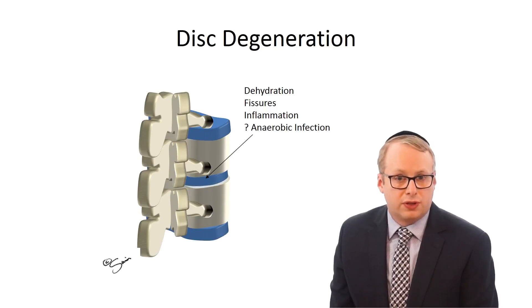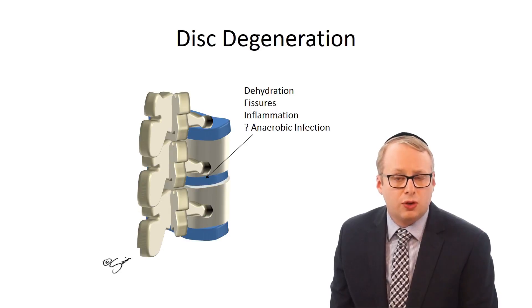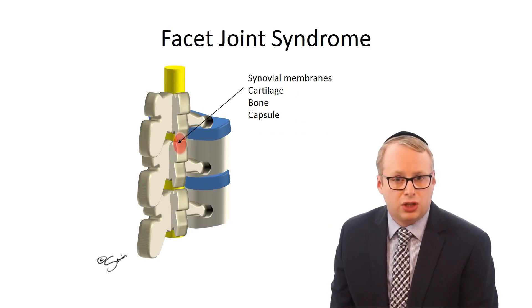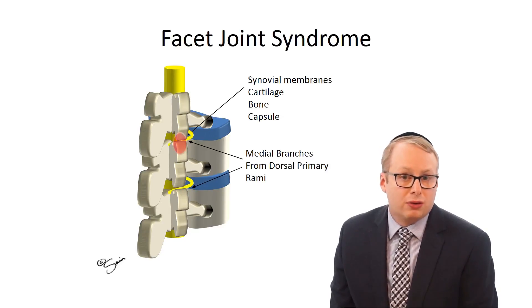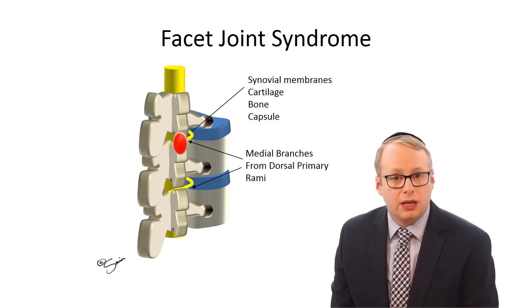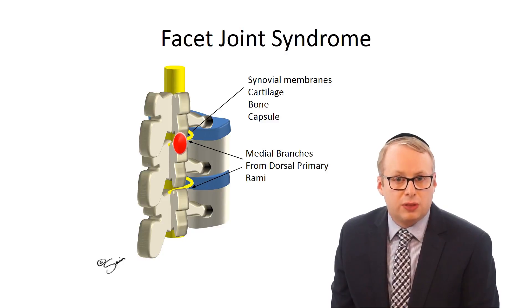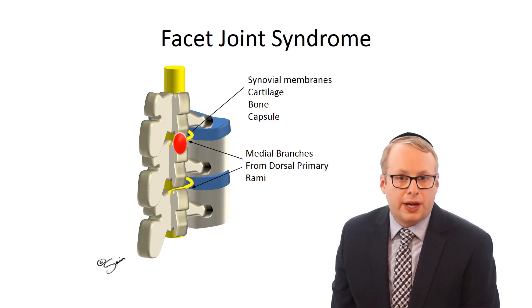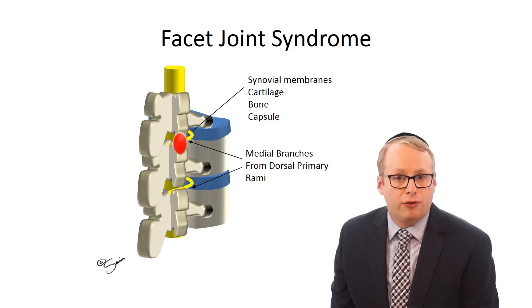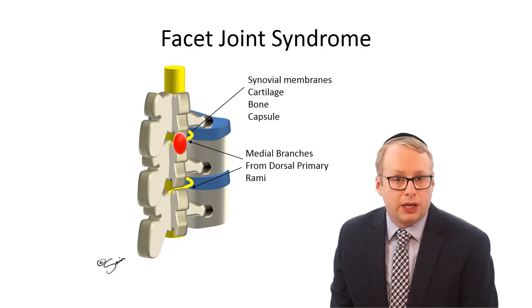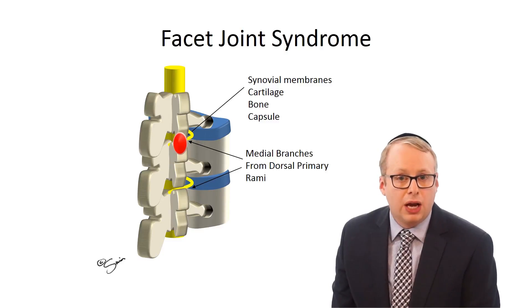Discogenic pain from degenerative discs accounts for around 40% of lower back pain, and its mechanisms are complex and still being understood. It's also worth mentioning facet joint syndrome pain, which is a common cause of lower back pain in around 30%. The pain can originate from either the synovial membranes, cartilage, bone or capsules of these joints, transmitted by the nerves of the medial branch of the dorsal ramus. This pain is concentrated in the back and often radiates towards the thigh or groin but not below the knee. It is often worse after being in one position for a long period of time and there is often stiffness.